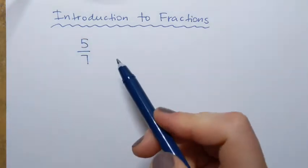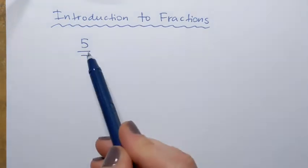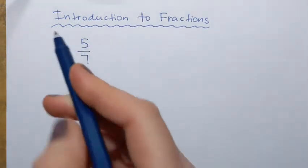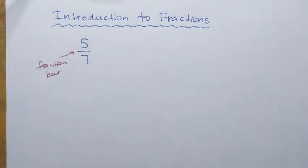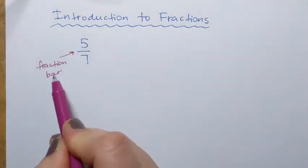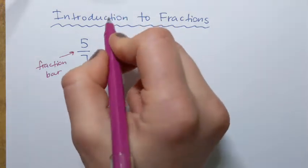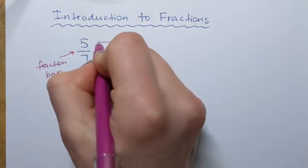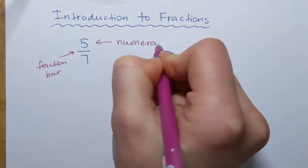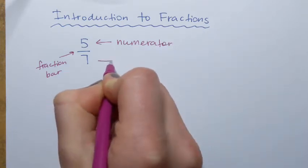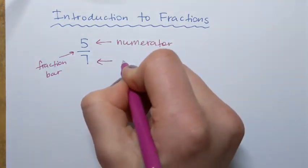A fraction consists of two numbers separated by a line. That line is called the fraction bar. The top number of the fraction is called the numerator, and the bottom number of the fraction is called the denominator.